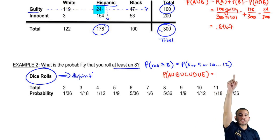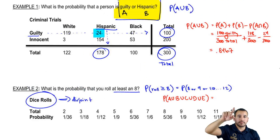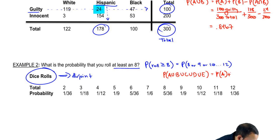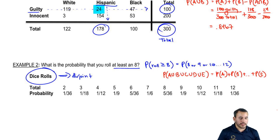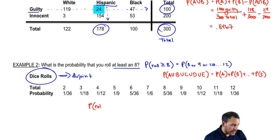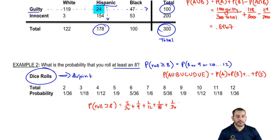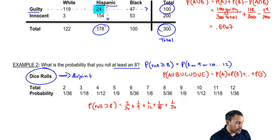Since they're disjoint, we don't need to include that final term — probability of A and B. We just literally add up all the probabilities. It's probability of A plus probability of B, all the way through to probability of E. So the probability of rolling at least an eight is: probability of rolling an eight (5/36) plus rolling a nine (1/9) plus rolling a ten, plus rolling eleven, plus rolling a twelve. Once we add everything up, we get 0.4167.